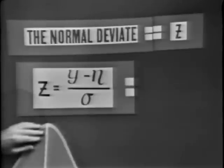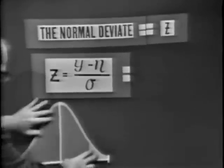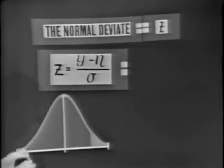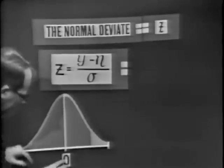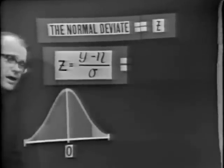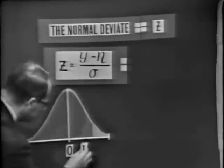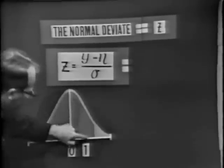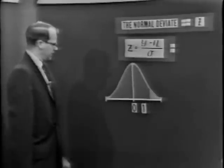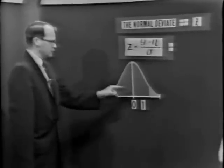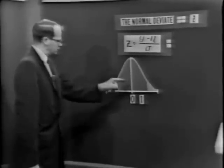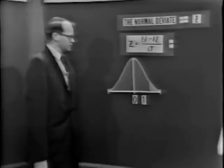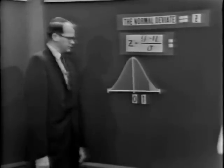Here's a picture of the distribution of the normal deviates. You'll notice it's also a normal distribution, except this one has a mean of 0 and a variance equal to 1 — and thus a standard deviation equal to 1. The distance out to the point of inflection on the curve is indeed equal to 1. That normal curve is the standardized normal distribution, and it's that distribution which is tabulated in all our tables. We can determine the areas under this curve very easily by reference to tables.